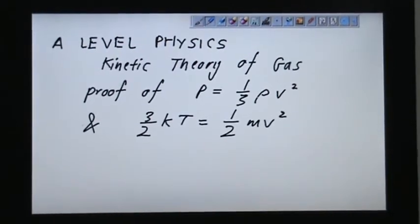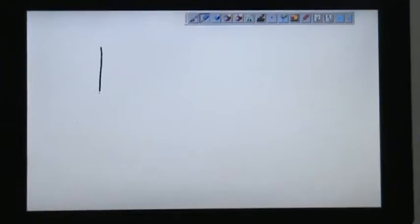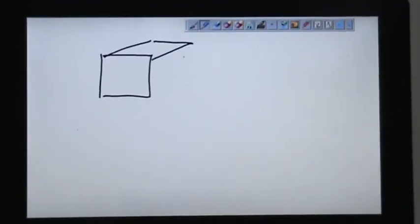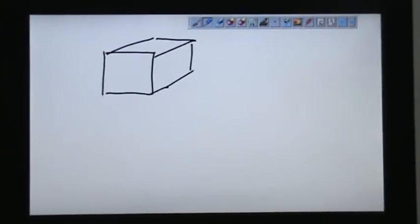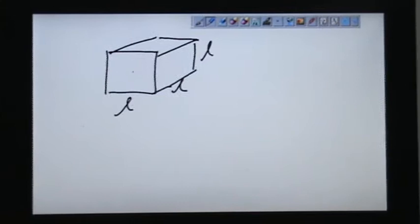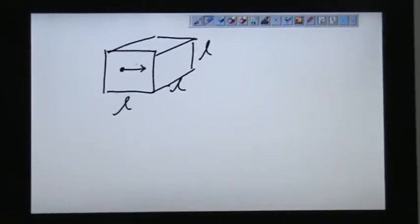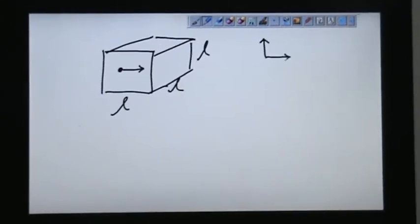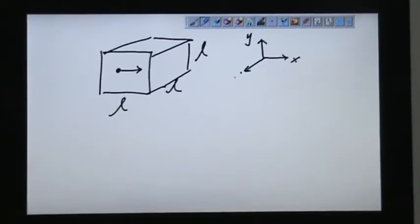When we mention kinetic theory of gas, we start off with a container like this. A container like this has a dimension or measurement of L, L, and L. This particle is moving in this direction. Let's say we have x, y, z direction.